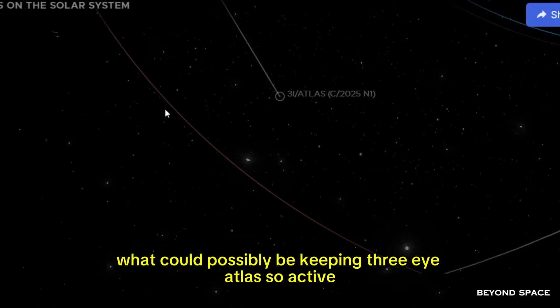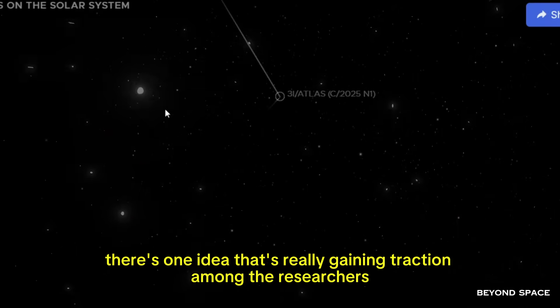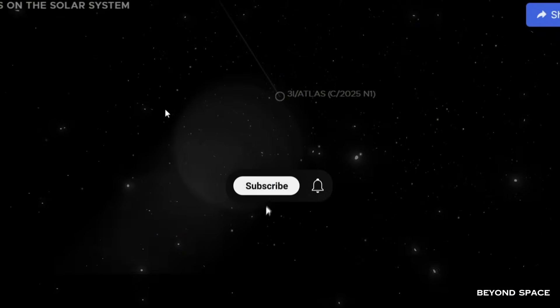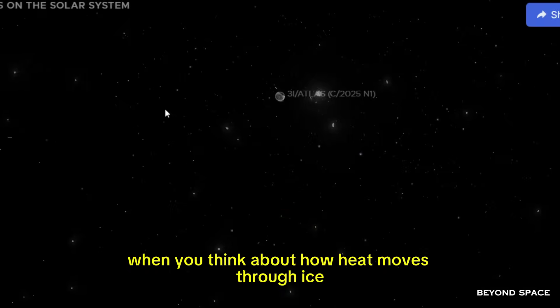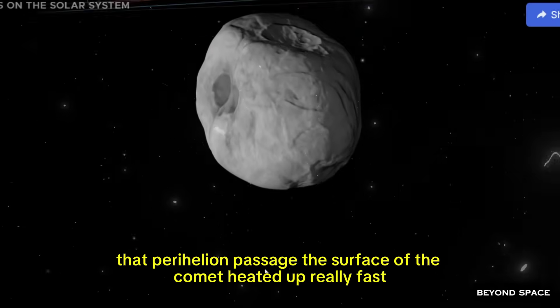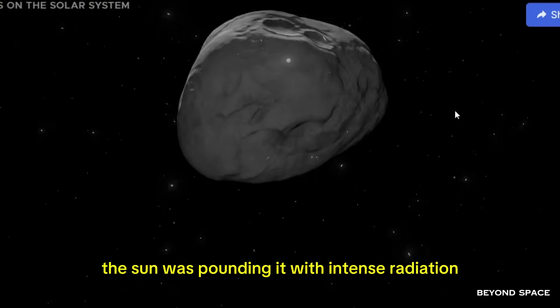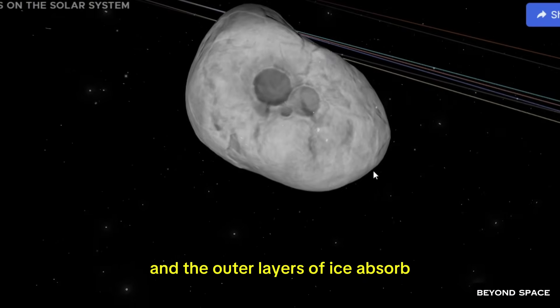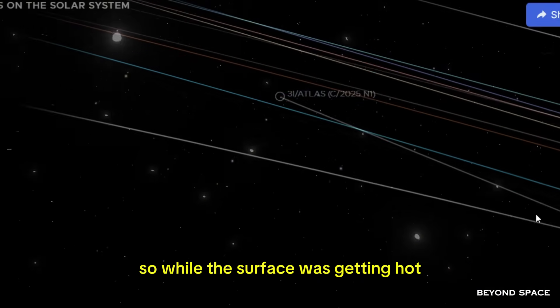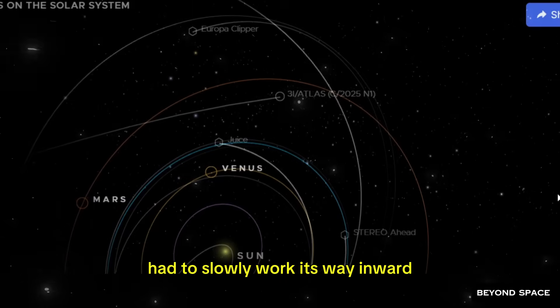There's one idea that's really gaining traction among the researchers, and it has to do with something called delayed heat waves. Let me walk you through this because it actually makes a lot of sense when you think about how heat moves through ice. When 3i Atlas made its closest approach to the sun, that perihelion passage, the surface of the comet heated up really fast. The sun was pounding it with intense radiation, and the outer layers of ice absorbed all that energy. But here's the thing. Ice is actually a pretty poor conductor of heat, so while the surface was getting hot, the deeper layers underneath were still cold. They lagged behind. The heat had to slowly work its way inward.